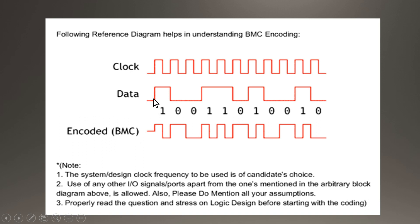When data is logic high, the polarity at the BMC serial stream will be inverted for half the clock cycle, and it will come back to its normal polarity. But when data is zero, the polarity of this BMC stream will be inverted and will remain for the complete clock cycle.